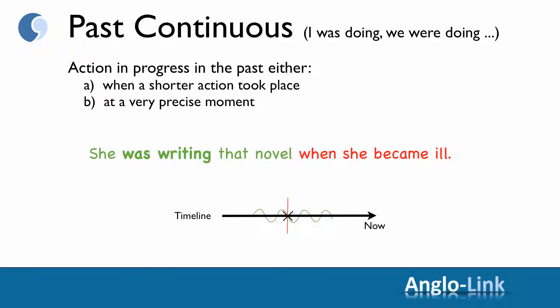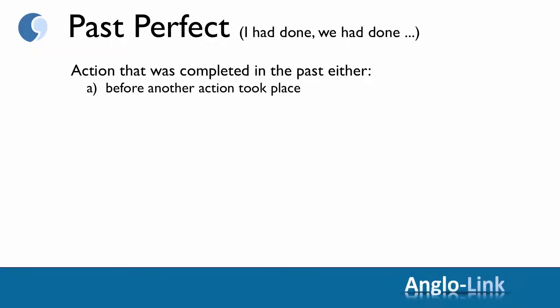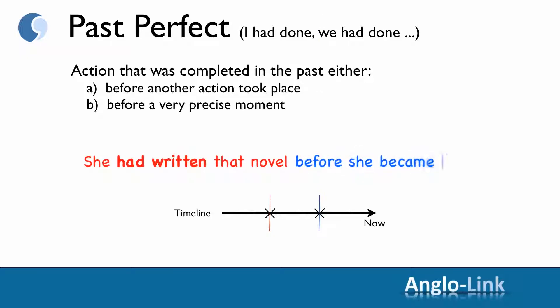The next tense we looked at was the past perfect — I had done, we had done, etc. And as you will remember, that was about a completed action in the past, either before another action took place, or before a very precise moment. For example: she had written that novel before she became ill.